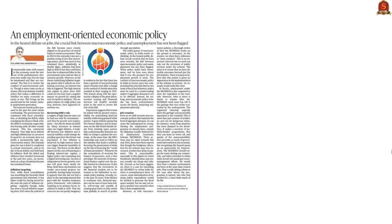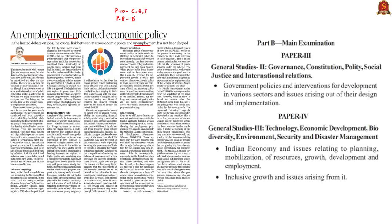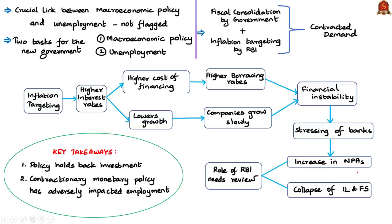The first topic of the day is the editorial titled 'An Employment-Oriented Economic Policy.' This editorial discusses the reasons for contracted demand in the Indian economy, which has led to job losses, along with the author's suggestions to improve the situation. It appears on page 10 of Chennai, Bengaluru, and Thiruvananthapuram editions, and page 8 of Delhi. This is relevant for GS Paper 2 under Government Policies and Interventions, and GS Paper 3 under Indian Economy, Employment, and Inclusive Growth.